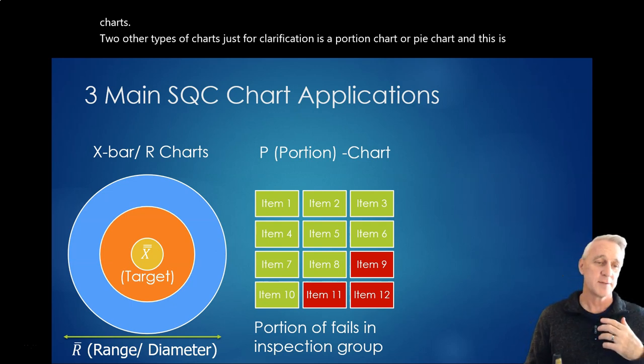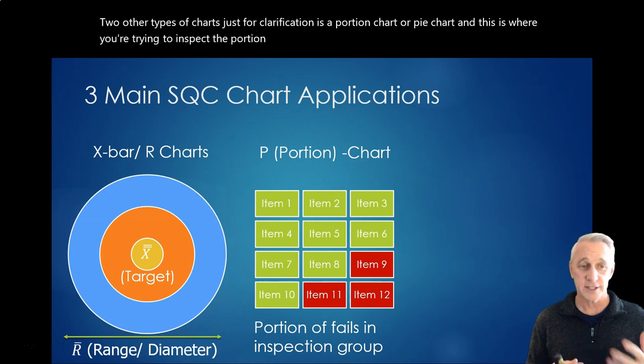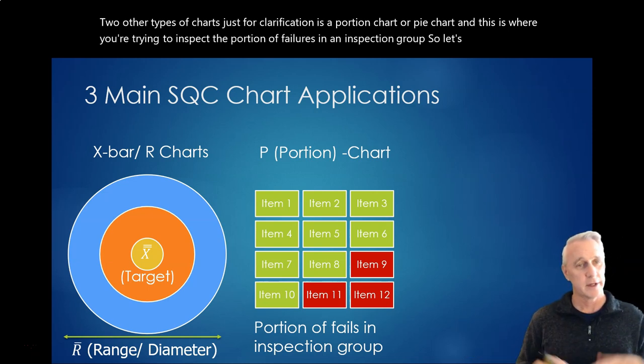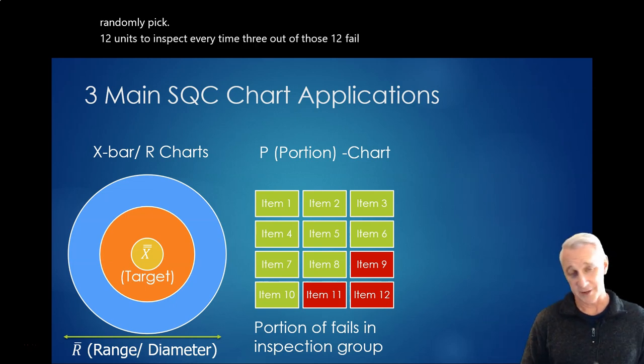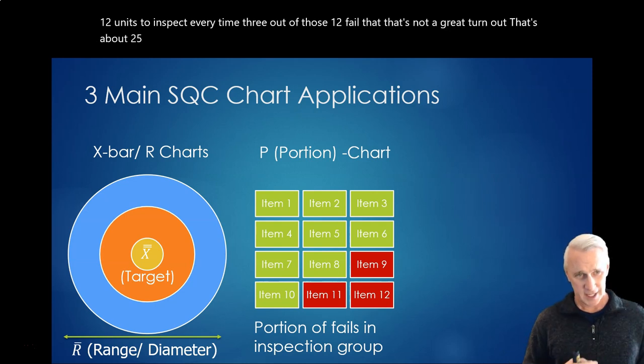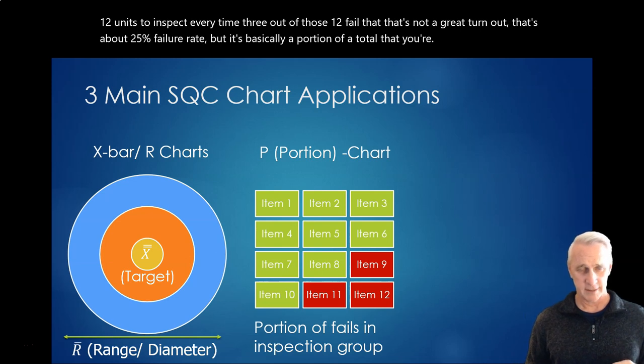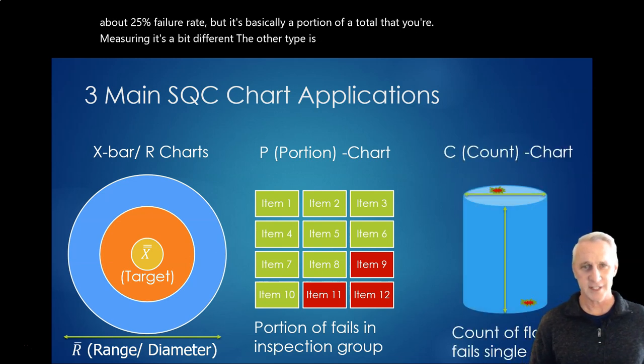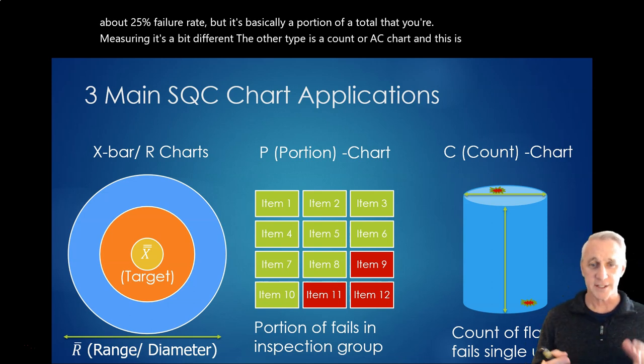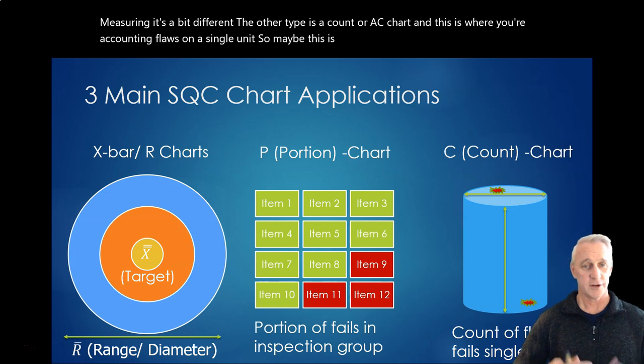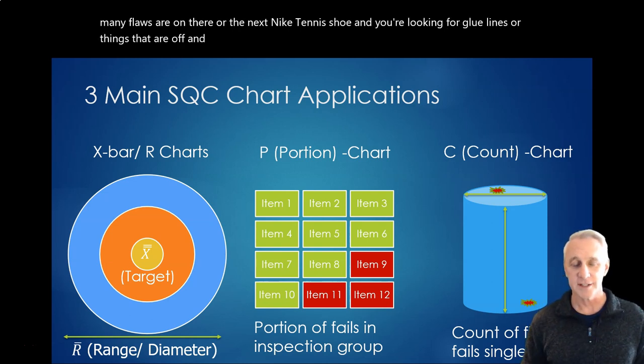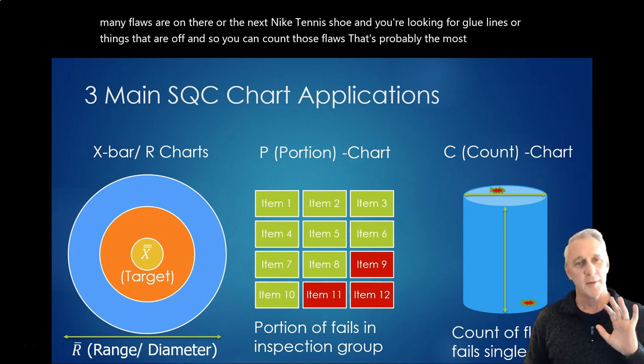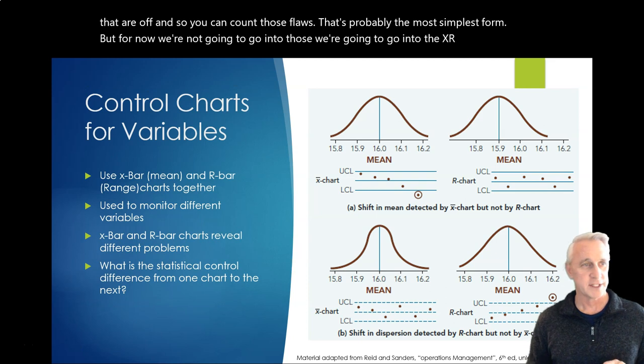Two other types of charts, just for clarification, is a portion chart or P chart. And this is where you're trying to inspect the portion of failures in an inspection group. So, let's say you randomly pick 12 units to inspect every time. Three out of those 12 fail. That's not a great turnout. That's about 25% failure rate. But it's basically a portion of a total that you're measuring. The other type is a count or a C chart. And this is where you're counting flaws on a single unit. So, maybe this is a garment, and you're looking for how many flaws are on there. Or, you know, the next Nike tennis shoe, and you're looking for glue lines or things that are off. And so, you can count those flaws.